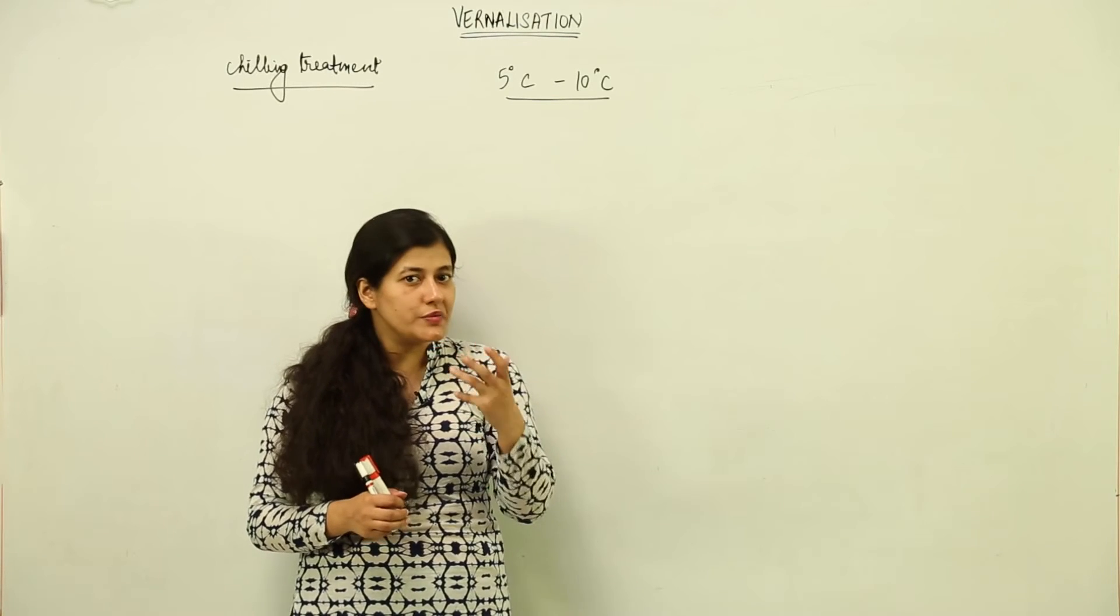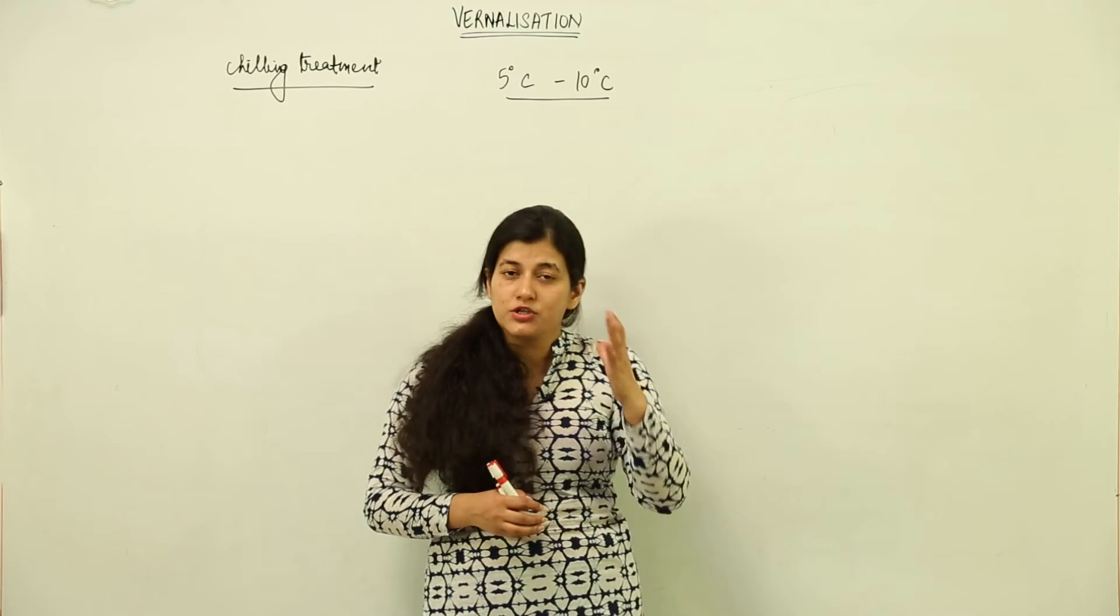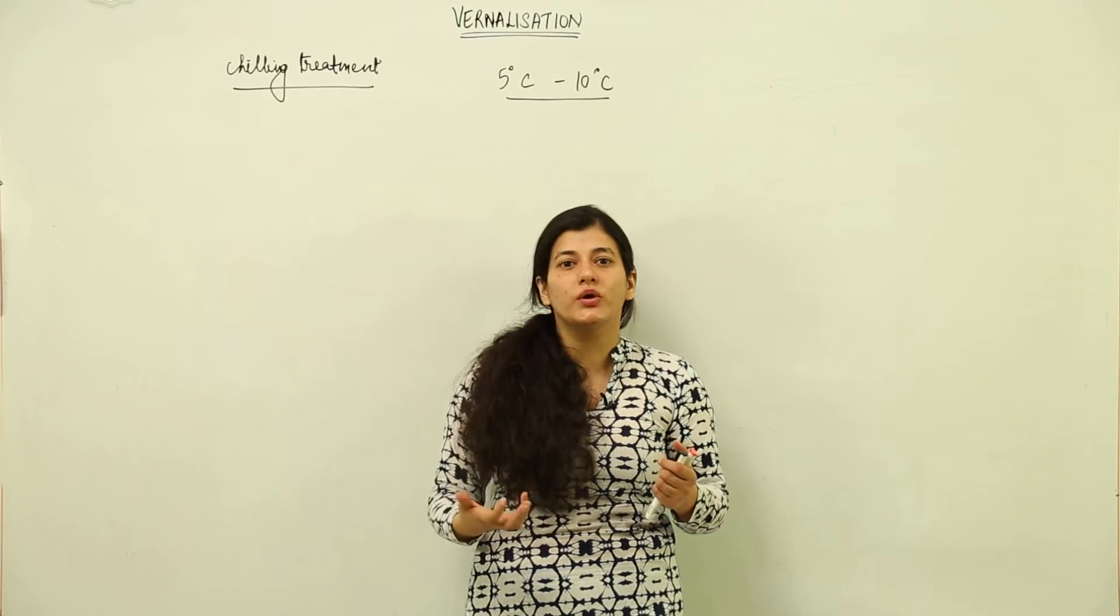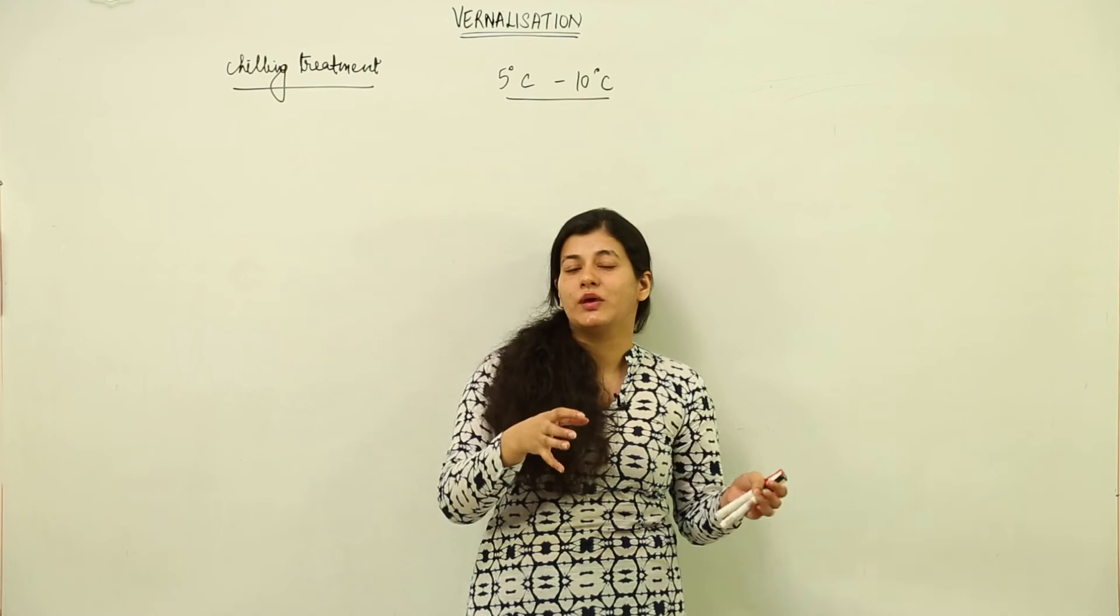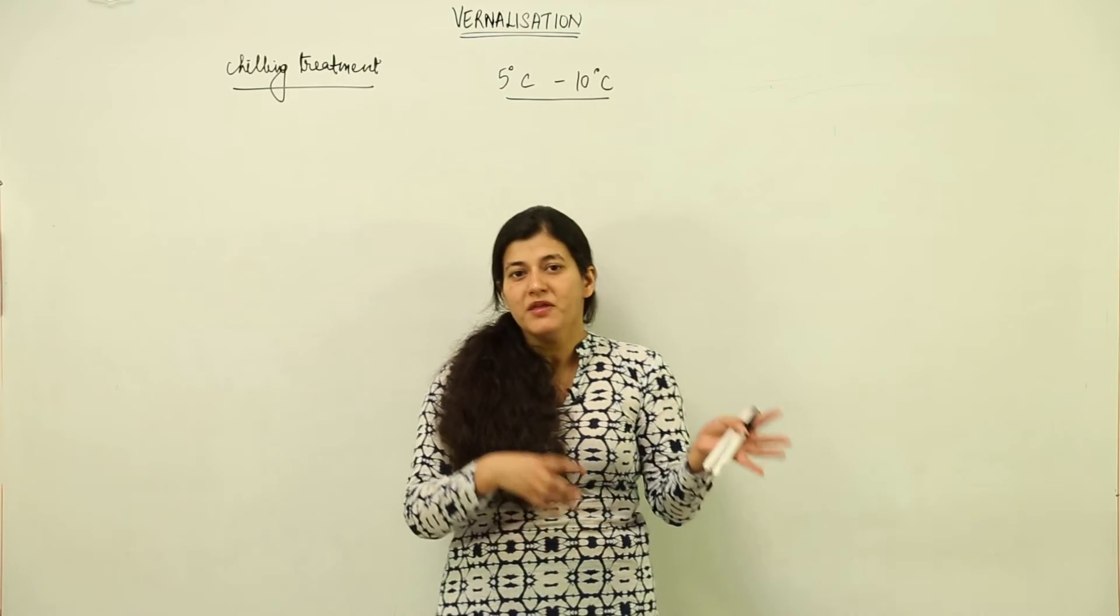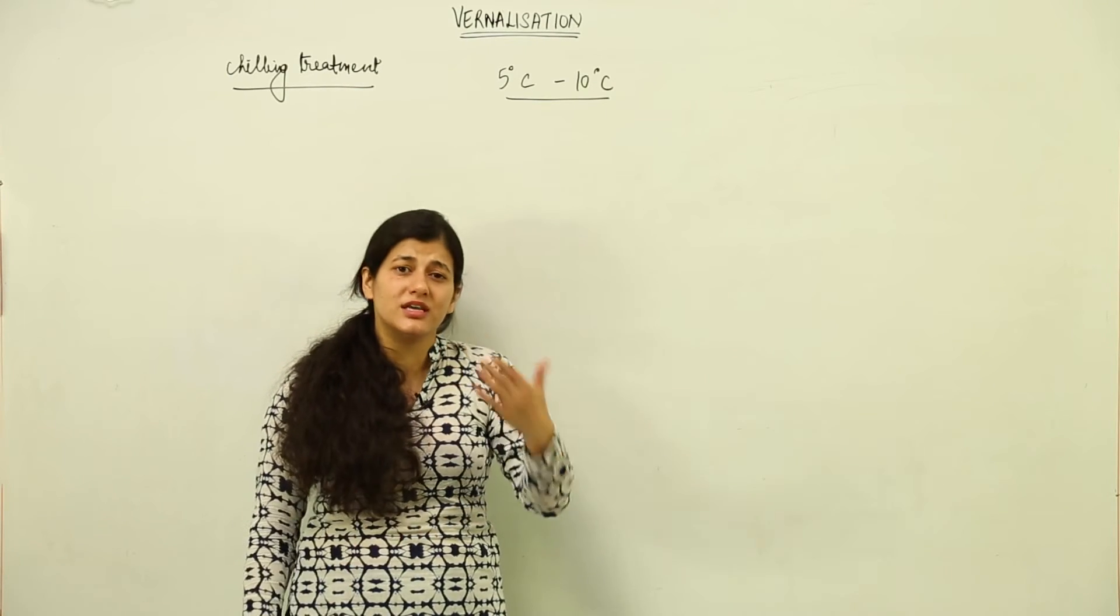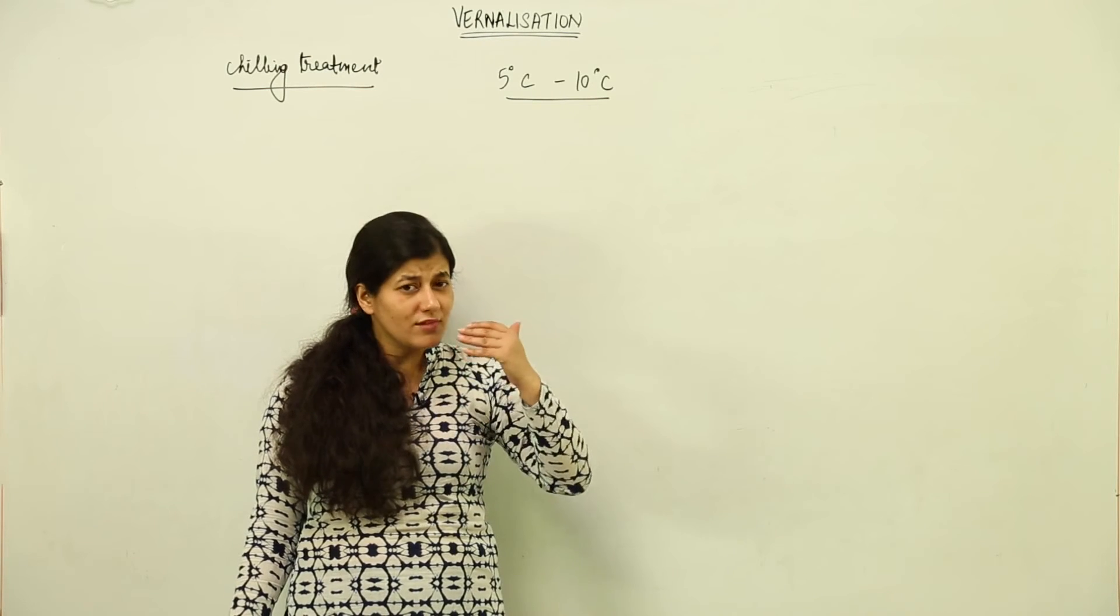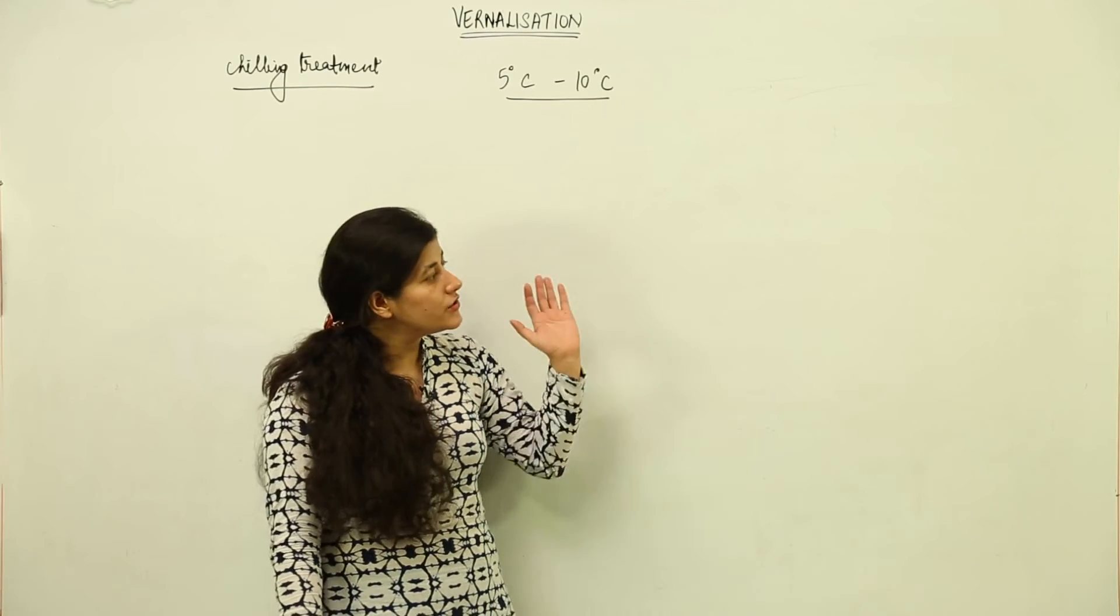What we are more concerned about is that the size of the bulb should be larger. The farmers induce de-vernalization. If it has to grow in cold temperature, they would make sure they sow the seeds in such a way that de-vernalization takes place. The chilling treatment or chilling temperature would not be given to the plants, and if it is given for flowering, then as soon as flowering takes place, de-vernalization is done so that the size of bulb increases.